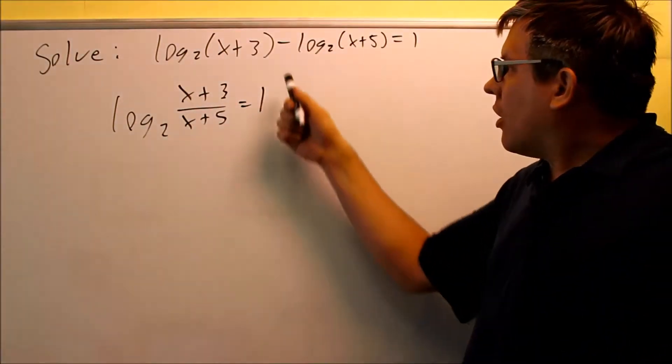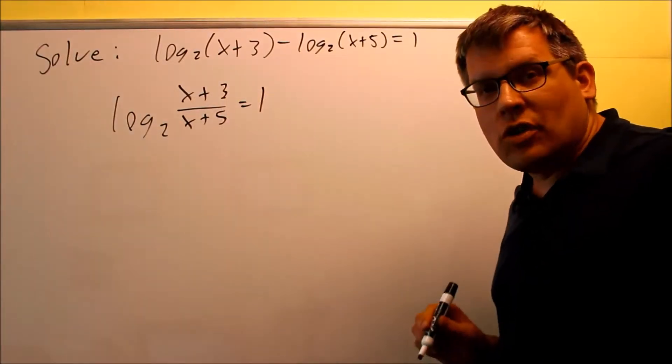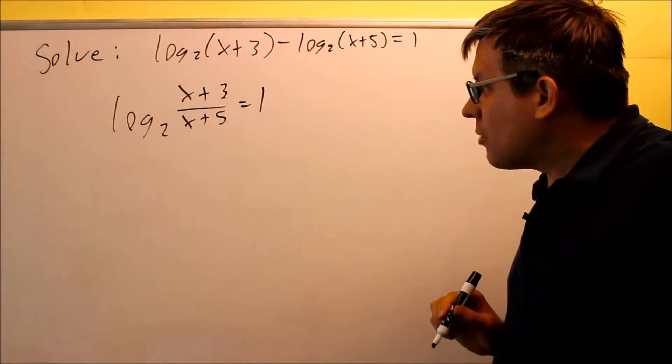So again, all I did was I put the first one on top, second one on the bottom, because the minus sign, we need to do division. That's rule number 7 with the log properties.